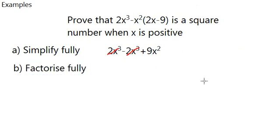We should factorize, factorize fully 9x squared. We know 9 is a square number, x is a square number, so the whole thing must be a square number. And so we can write it, express it as 3x bracket squared.